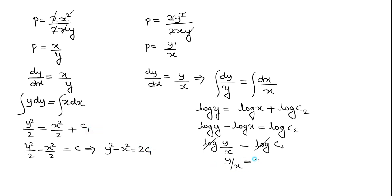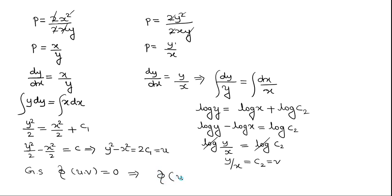The general solution of equations solvable for P: if we take U equals Y squared minus X squared and V equals Y by X as the two solutions, then the general solution is phi of U, V equals 0. Substituting, the general solution is phi of Y squared minus X squared, Y by X equals 0. This is the general solution of the given problem.